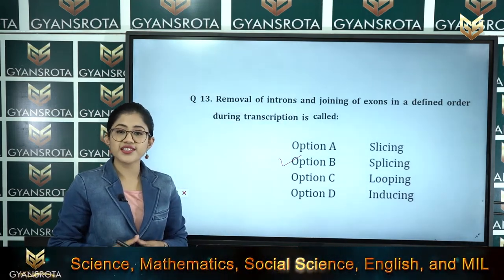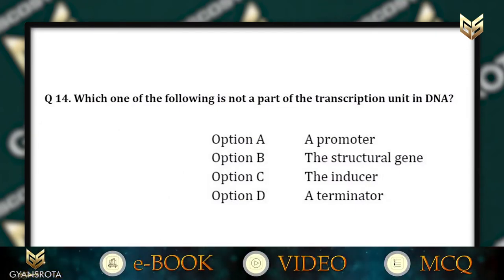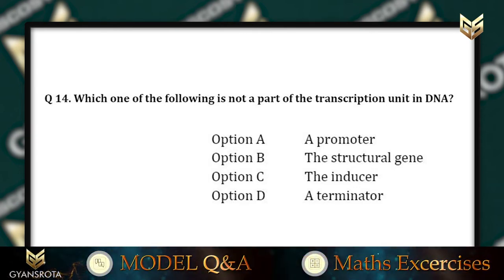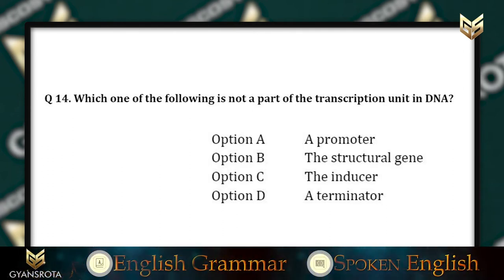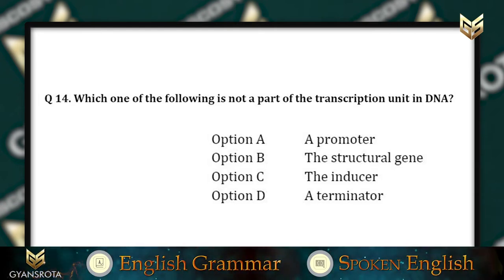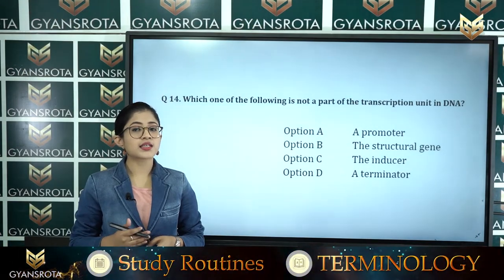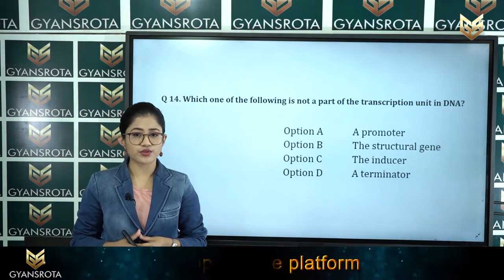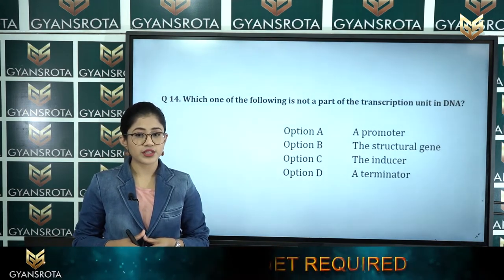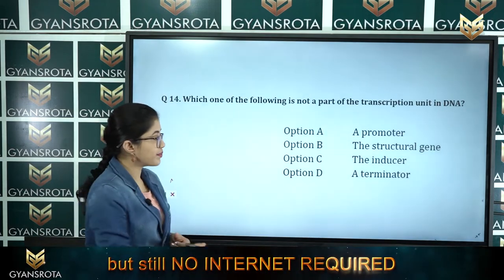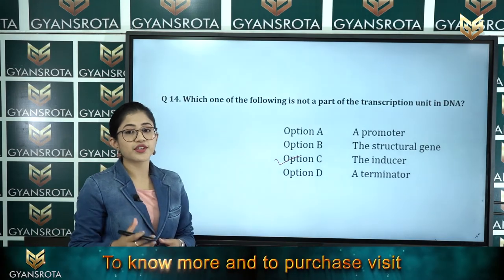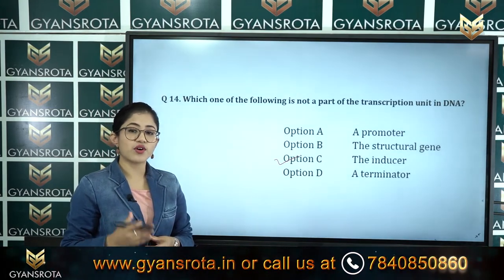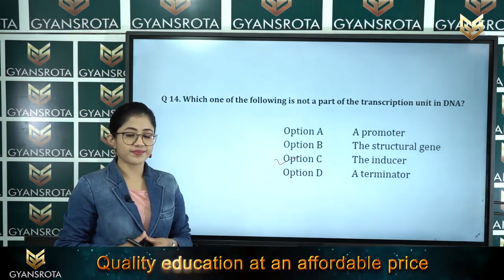Question number 14: Which one of the following is not a part of the transcription unit in DNA? Option A a promoter, option B the structural gene, option C the inducer, option D a terminator. The correct answer is option C, the inducer. The inducer is not part of the transcription unit of DNA, while the promoter, structural gene, and terminator are all parts of it.